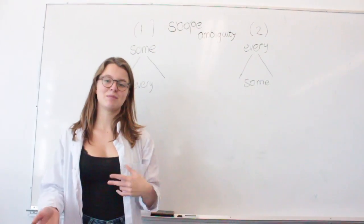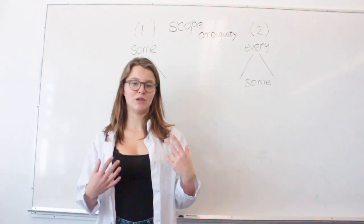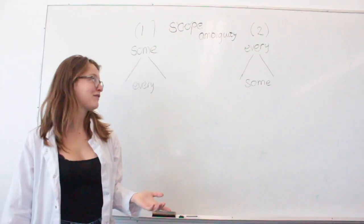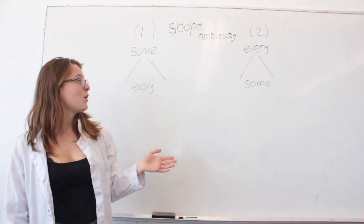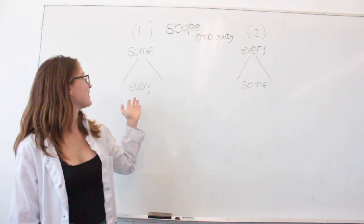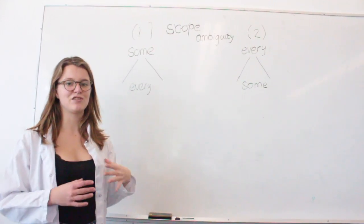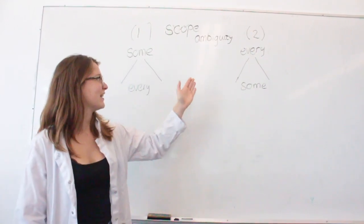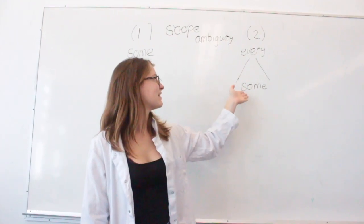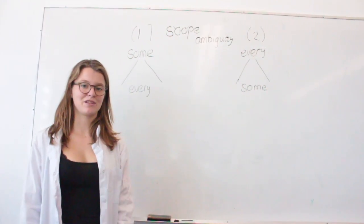As we can see, the interpretation depends on which scope you apply to the sentence. An easy way to fix this would be to say 'this person needs to drink every cup' for the first meaning, and 'every cup needs to be drunk by a different person' for the second meaning.